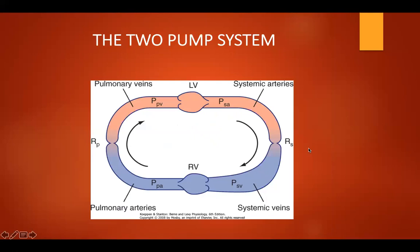The cardiovascular system has two pumps in series: the pulmonary part and the systemic part. The series arrangement requires that the flow pumped by the two ventricles be virtually equal over any substantial period; otherwise, all the blood will ultimately accumulate in one or the other vascular system. Because the cardiac function curves of the two ventricles differ substantially, the filling pressure for the two ventricles must differ appropriately to ensure equal stroke volume.